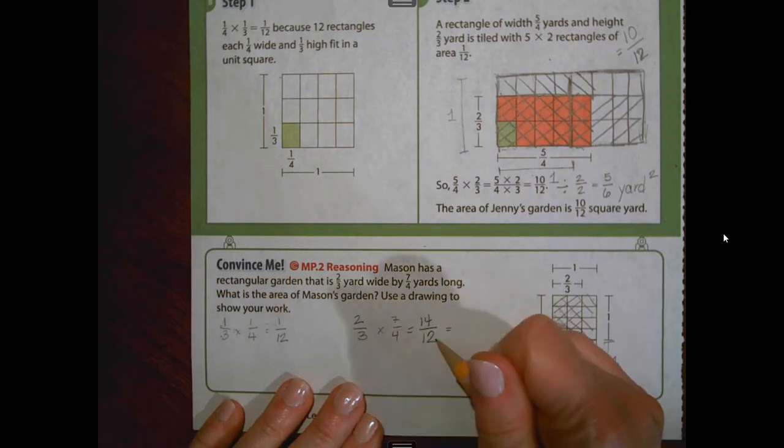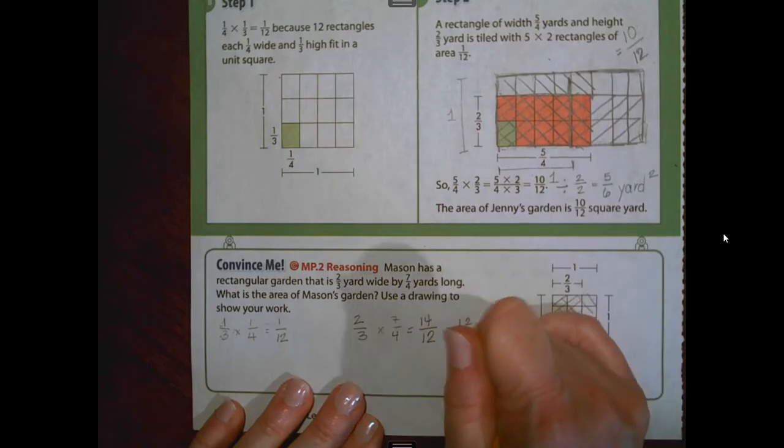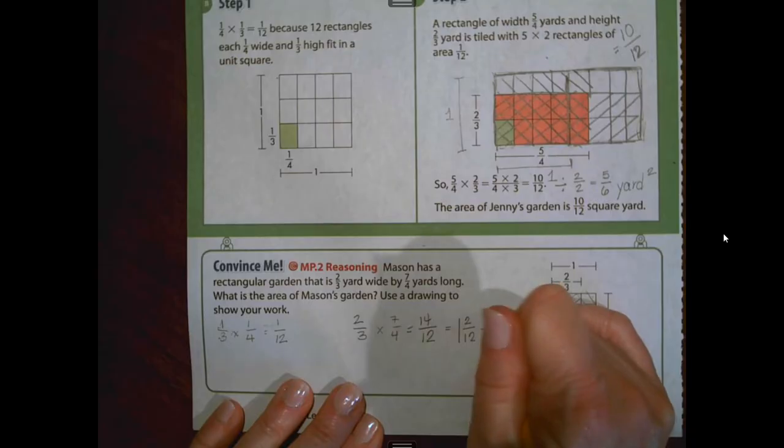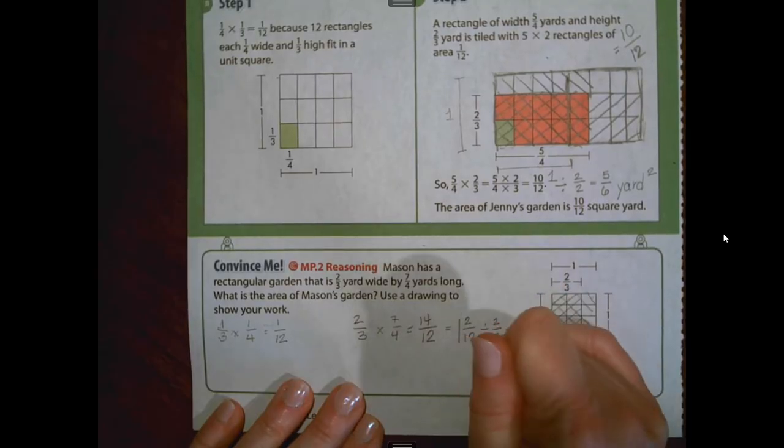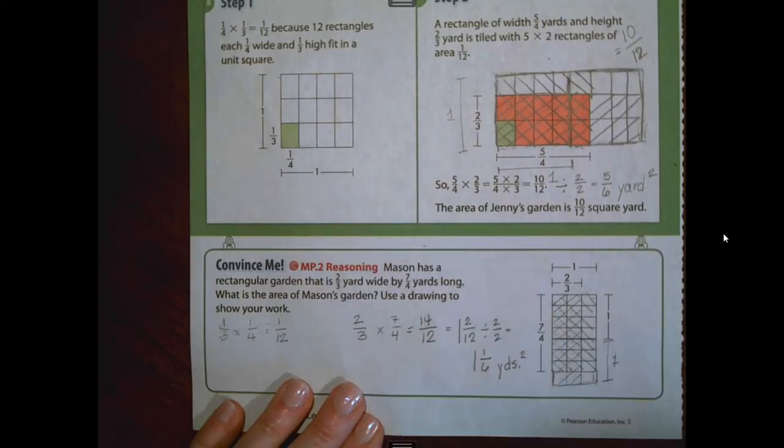Twelve goes into 14 one time. We have two left over. So one and two twelfths, which we know simplifies. They're both even. So we're going to divide by two to get one and one-sixth yards squared of garden space.